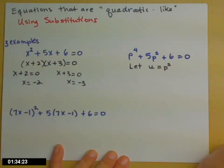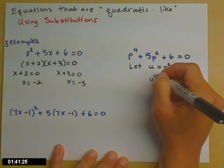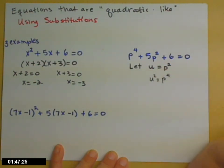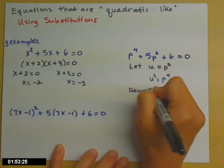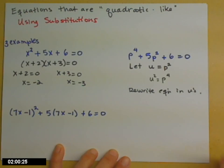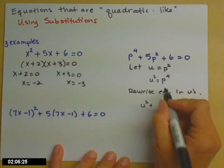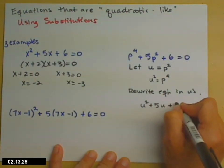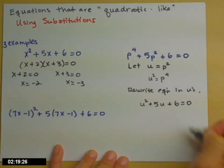You might ask: why would I do that? Well, watch. If u equals p squared, then u squared would be p to the fourth. Now rewrite the equation using u's. The first term is p to the fourth, which is the same as u squared. Then plus 5p squared, but p squared is the same as u, so plus 5u, plus 6 equals 0. We've done the substitution and now have a quadratic equation.